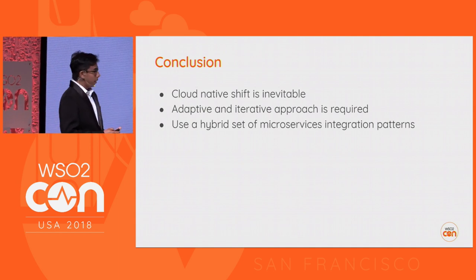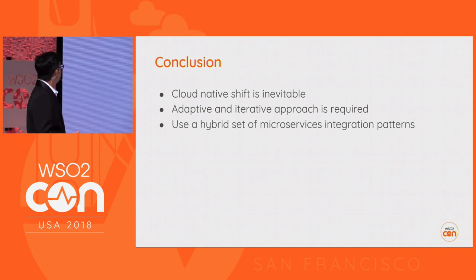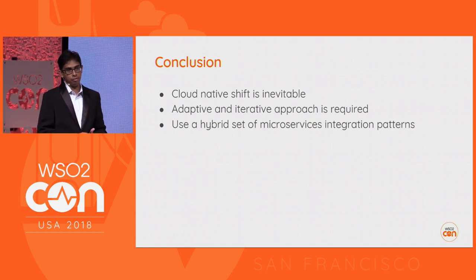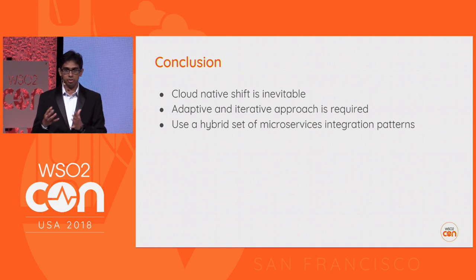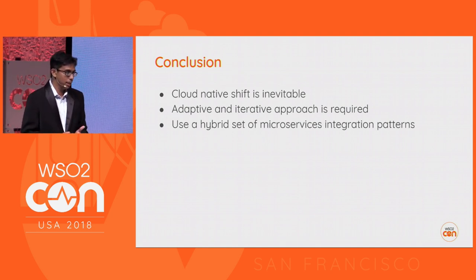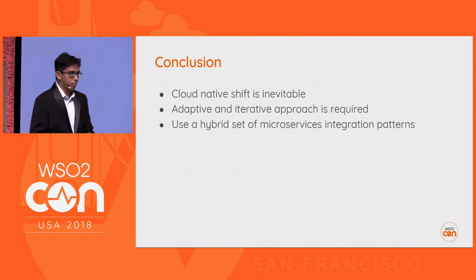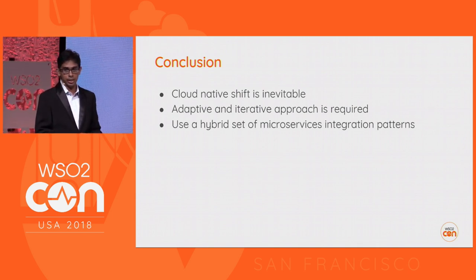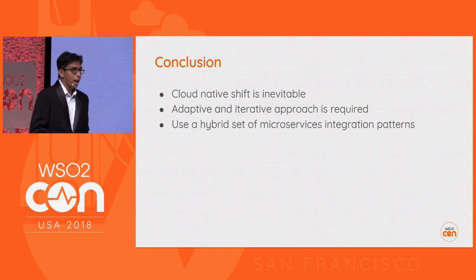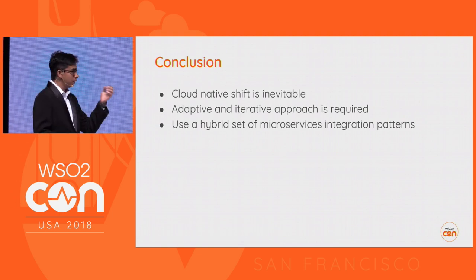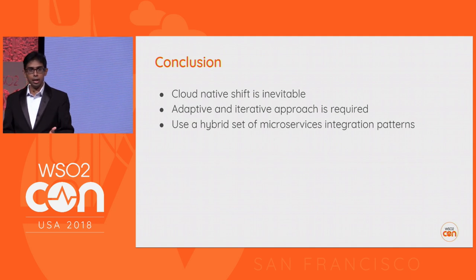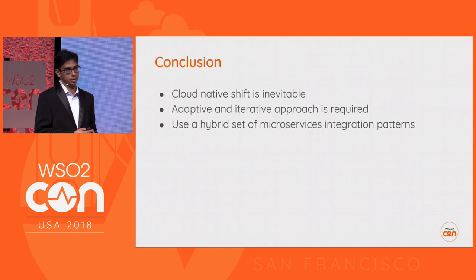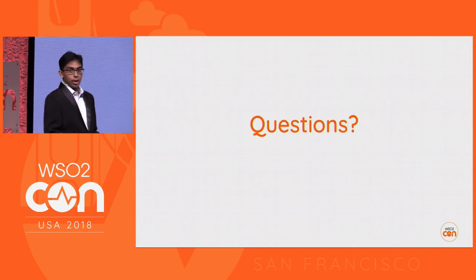To summarize: the cloud-native shift is inevitable, so you have to prepare and plan for it. This kind of adaptive and iterative architecture is required to address most of the challenges in building cloud-native architectures. A hybrid approach to implement microservices integration is absolutely essential. Thank you very much. Any questions?